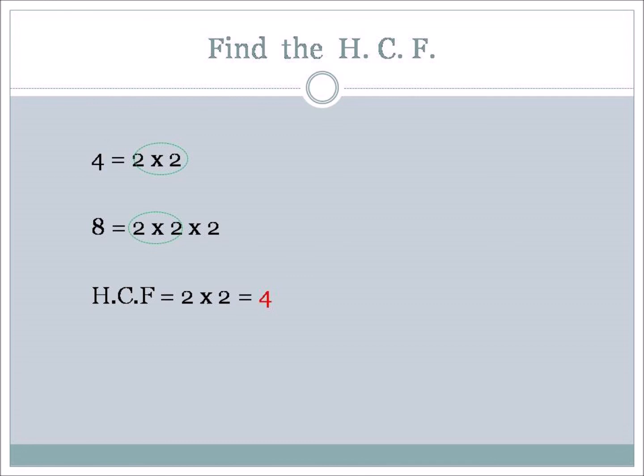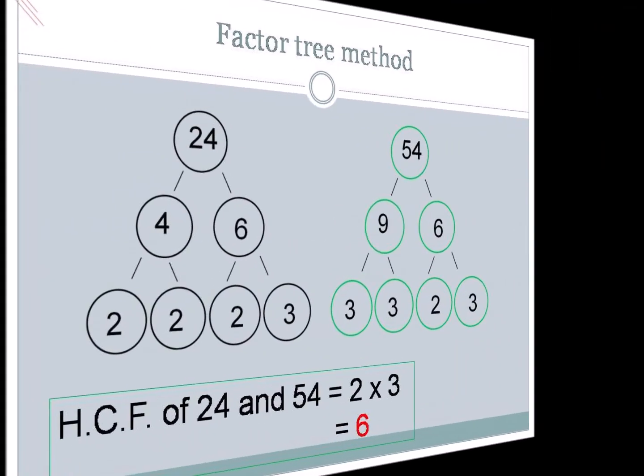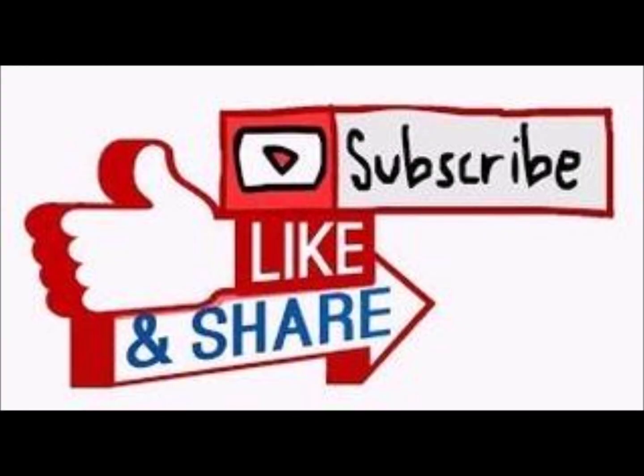If you're dealing with a factor of 3, you can still calculate the HCF by looking at the prime factors. For example, 24 and 54 have prime factors 2 × 2 × 2 × 3 and 3 × 3 × 2 × 3 respectively, giving HCF = 2 × 3 = 6. Thank you all for watching — hope you enjoyed, and remember: don't get mixed up with HCF and LCM!